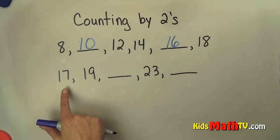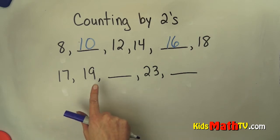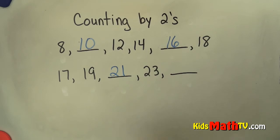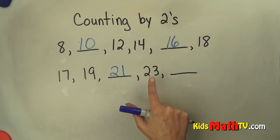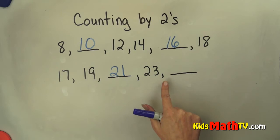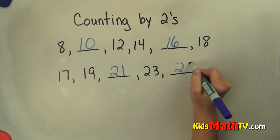17 plus 2 is 19. 19 plus 2 is 21. 21 plus 2 is 23. And 23 plus 2 is 25.